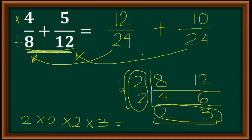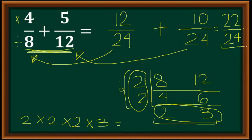Since they now have the same denominator, they are considered similar fractions. All you have to do is add the numerators. That is 12 plus 10 is 22, and copy the denominator. It is not our final answer because we need to simplify — we have 22 over 24.